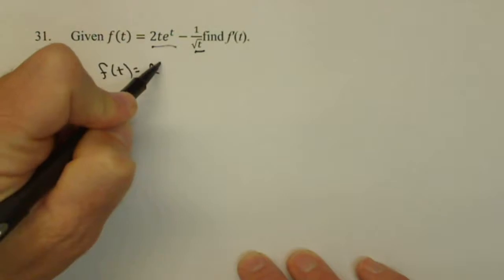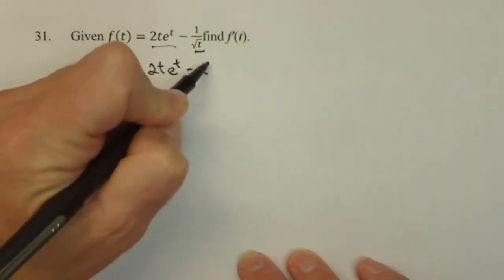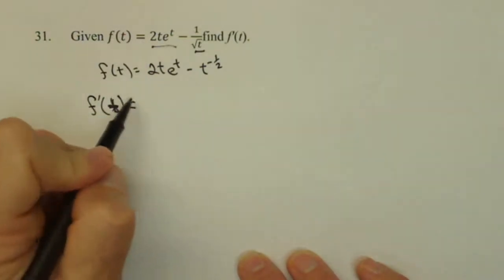f of t equals 2t e to the t minus t to the negative 1 half. So when we go to find our f prime of t, the first thing we're going to do is a product rule here.